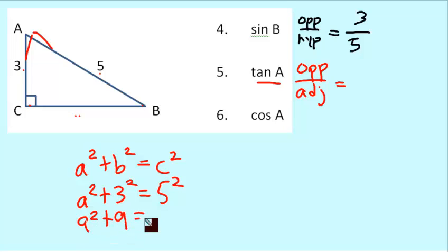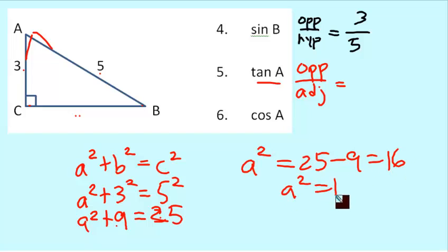So, a squared plus 9 equals 25. Subtract away the 9 from both sides. And you get a squared by itself on the left. 25 minus 9 is 16 on the right. So, a squared is 16.